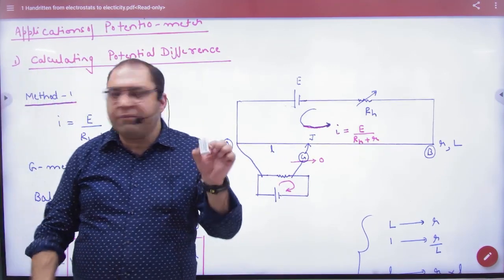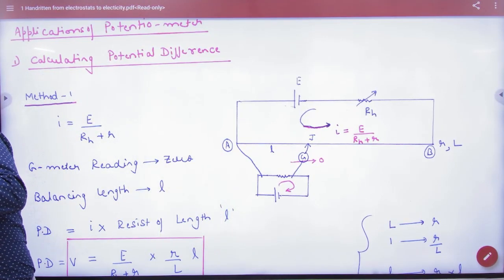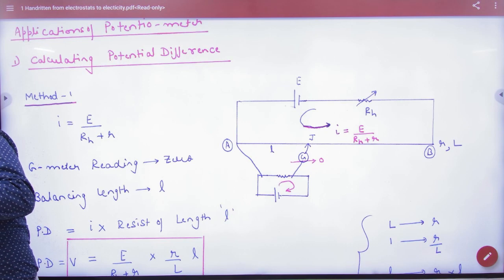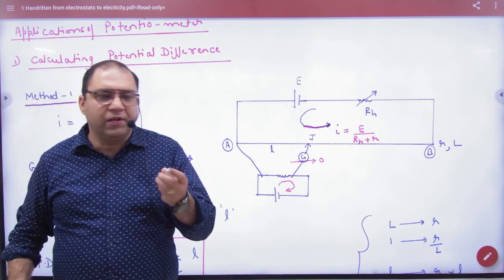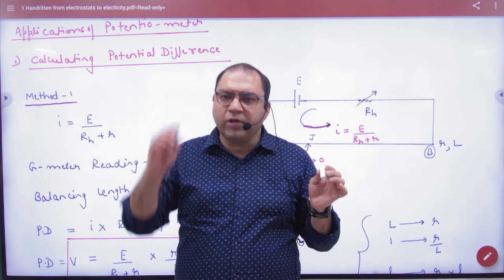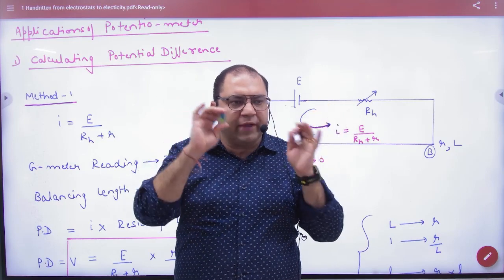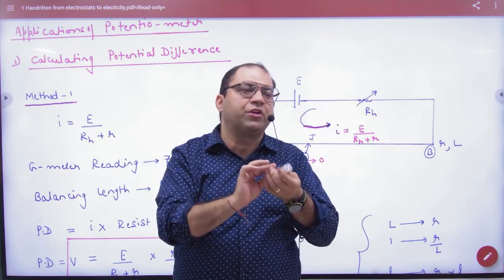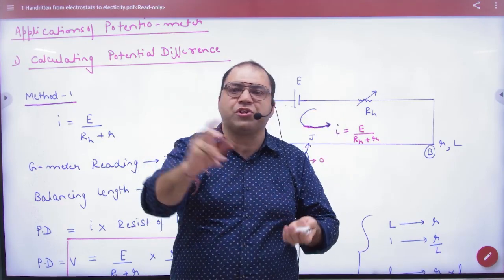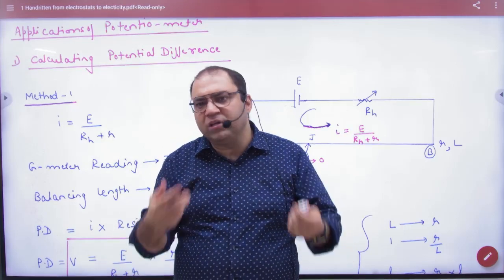if you give me two cells, two types of cells, but you don't know how much EMF is. I don't know. You give one other cell. This EMF is E1 and E2. So this potentiometer will tell you the ratio of both EMF without knowing the EMF. You will find the EMF.